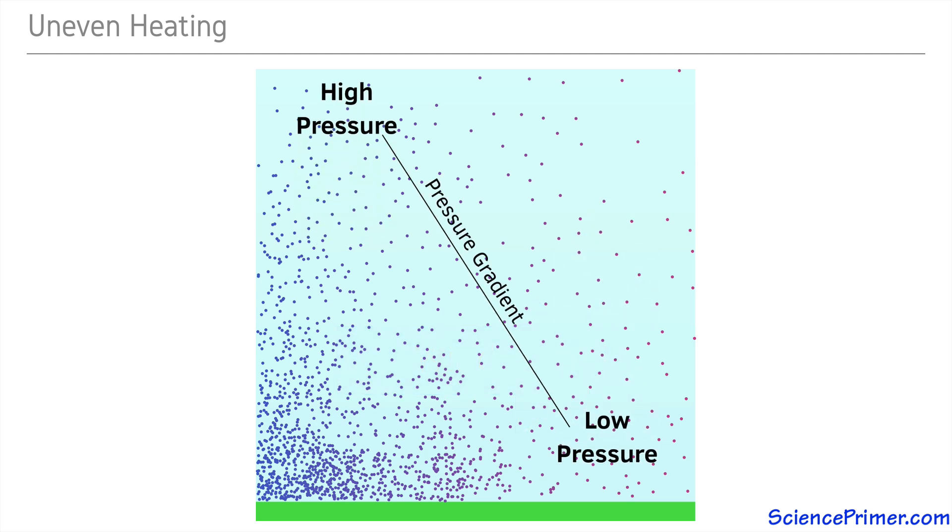Air masses moved by pressure gradient force transfer heat by convection as cooler gas particles move into regions containing warmer gas particles.